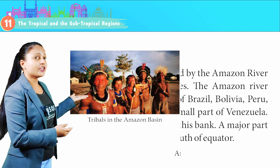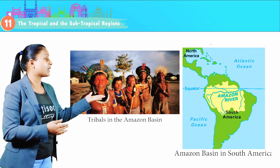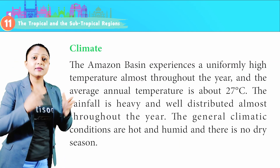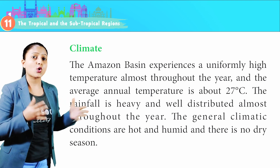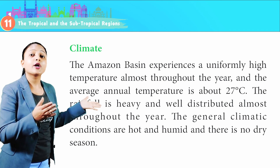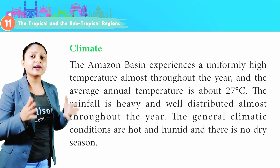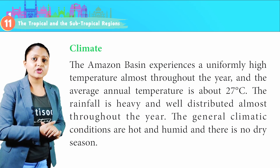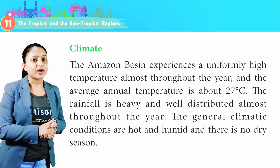This image shows the tribals in the Amazon Basin, and this is the Amazon Basin in South America. Climate: The Amazon Basin experiences a uniformly high temperature almost throughout the year, and the average annual temperature is about 27 degrees Celsius. The rainfall is heavy and well distributed almost throughout the year. The general climatic conditions are hot and humid, and there is no dry season.